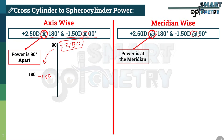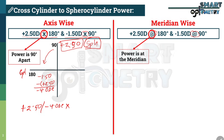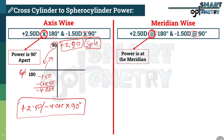Now you can easily convert this power into sphero-cylindrical format. If we consider plus 2.5 as the spherical power, the spherical portion will be plus 2.5. This meridian becomes spherical, so the other will automatically become the cylinder meridian. The cylinder power is the difference: minus 1.5 minus plus 2.5, which equals minus 4 diopters. The axis is 90 degrees apart from the cylinder meridian — since the cylinder meridian is 180 degrees, the axis will be 90 degrees. So the sphero-cylindrical format is plus 2.5 sphere, minus 4 cylinder, axis 90 degrees.